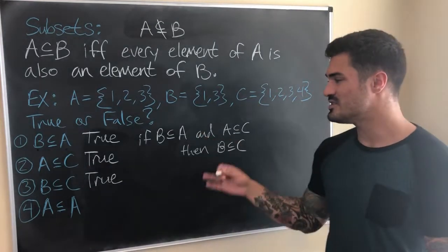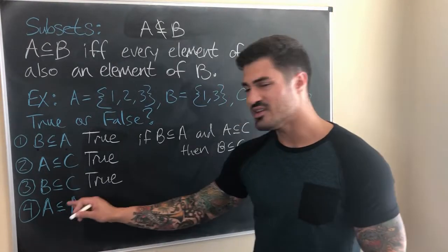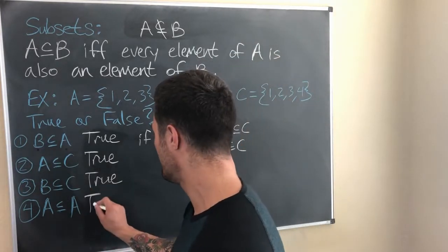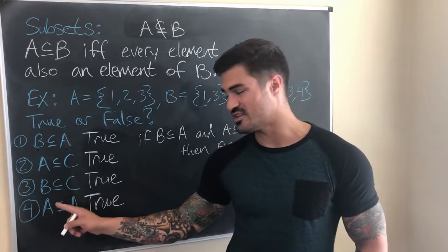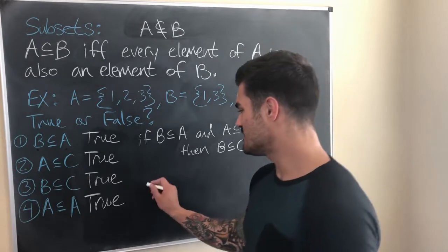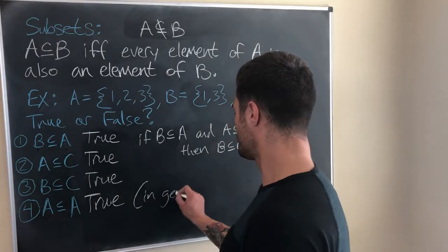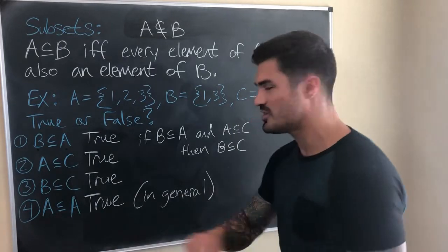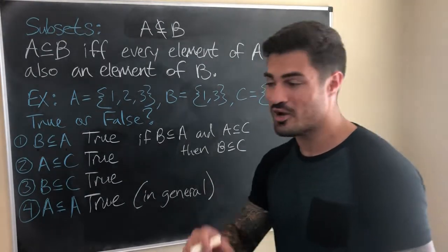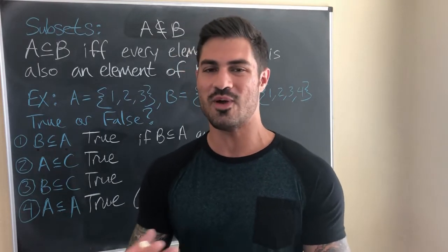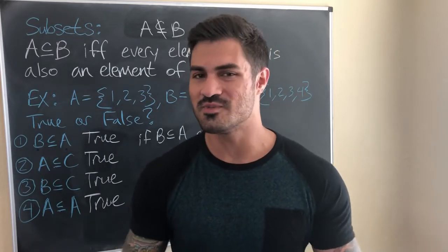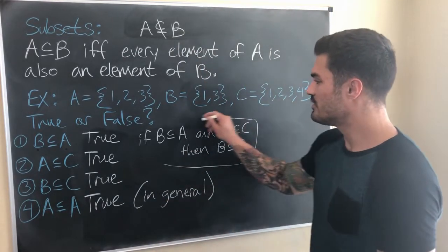Is A a subset of A? Is every element of A also in A? Yes, of course. In general, every set is a subset of itself. Now let's finish by proving this transitivity result: if A ⊆ B and B ⊆ C, then A ⊆ C. For those learning proofs, this is a great introductory example — it uses arbitrary sets and the same ideas used in harder proofs, so it's a good way to build confidence.